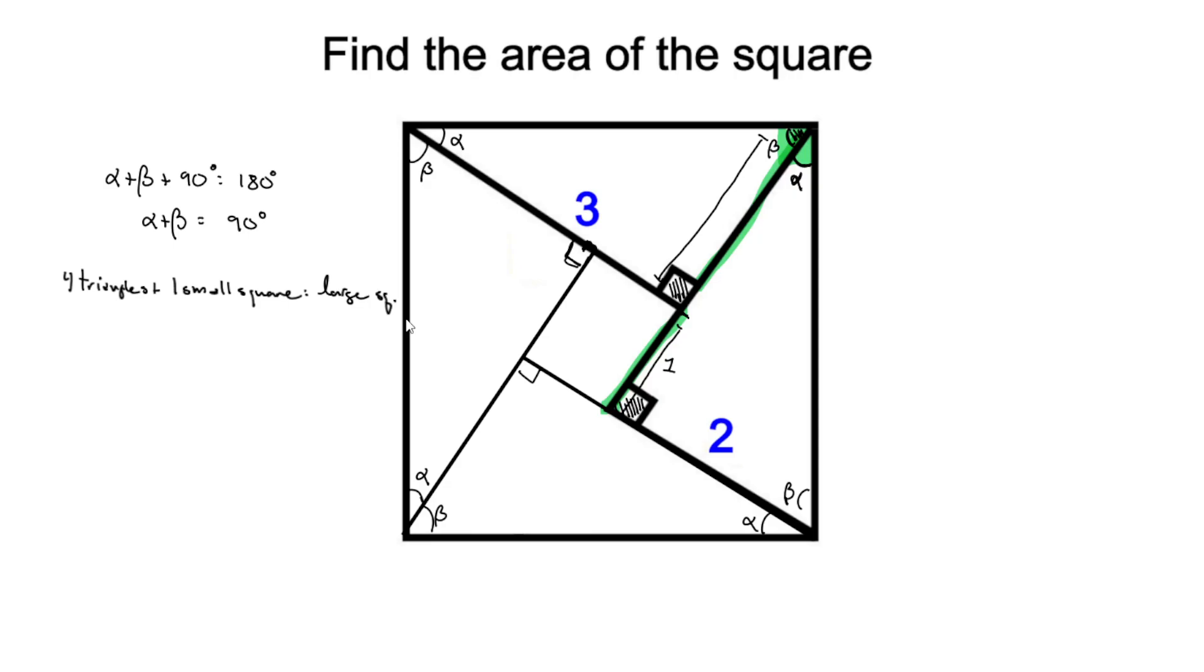So the area of the four triangles - one of the triangles would be the base 2 times 3, all divided by 2. The area of our small square, this has a side length of 1, would be 1 squared, just 1. So what we get, we'll get 12 plus 1, and that would be equal to 13. And that is the area of the square.